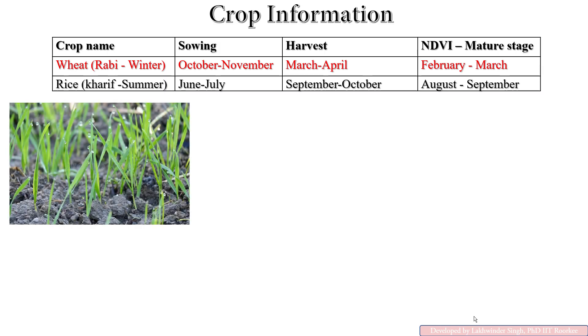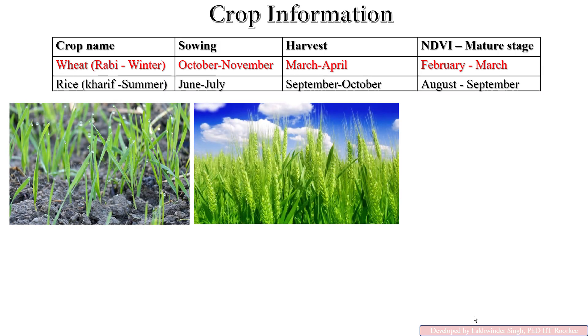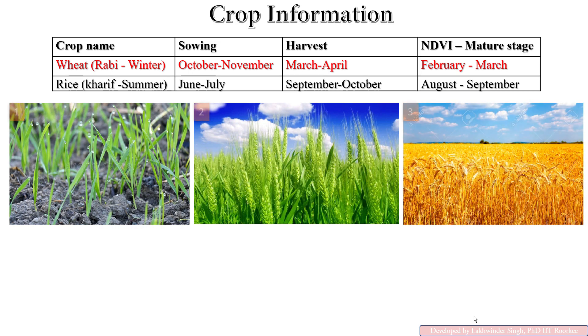Let's discuss, it is a sowing crop in the first image and these are the three images showing the different stages of the crop. We can see the NDVI we must take in the month of February and March if crop is going to harvest in March and April.